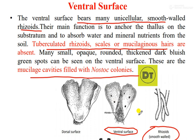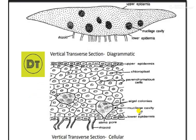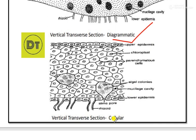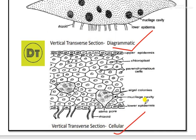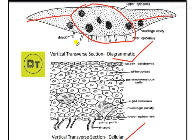This is the external morphology. Now moving to internal morphology and internal structure — first is the diagrammatic picture and second is the cellular picture. The diagrammatic picture shows a very simple structure where the sides are tapering and separate.